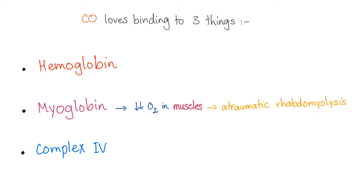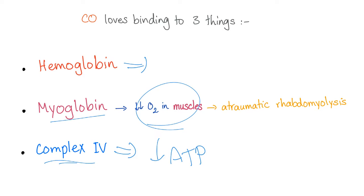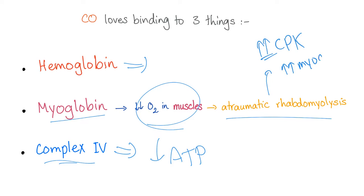Carbon monoxide binds to three things: hemoglobin, myoglobin, and complex IV. Binding to hemoglobin causes a left shift of the oxygen dissociation curve. Binding to complex IV decreases ATP formation. Binding to myoglobin decreases oxygen in muscles, leading to atraumatic rhabdomyolysis, increased CPK (creatinine phosphokinase) from destroyed muscles, and myoglobinuria.